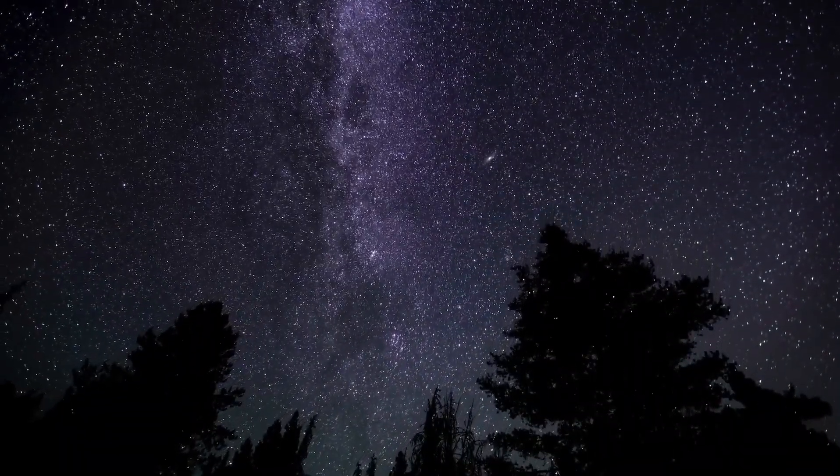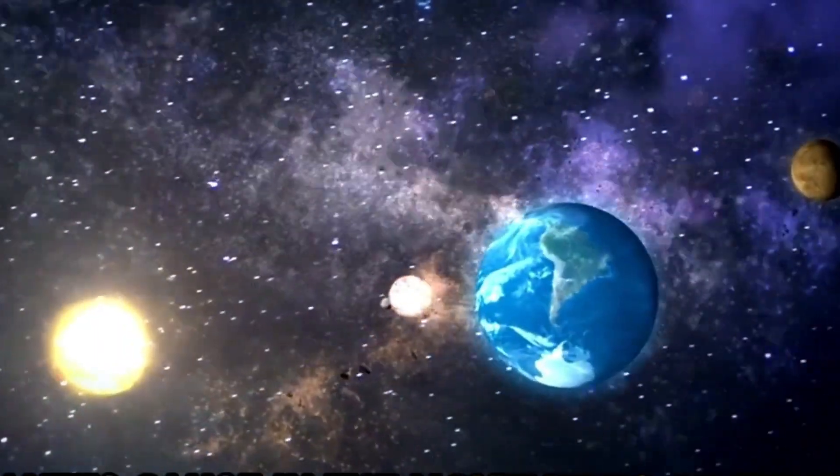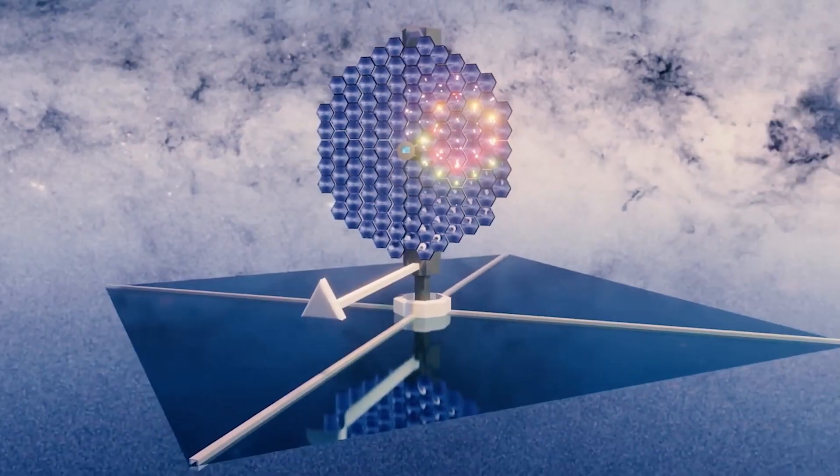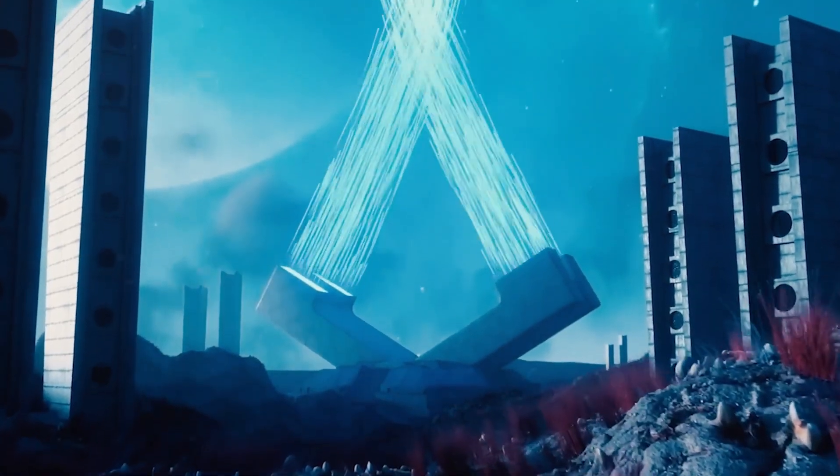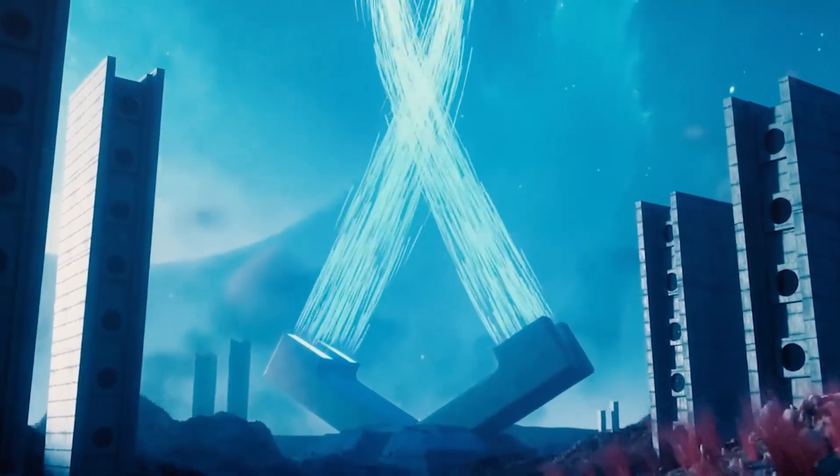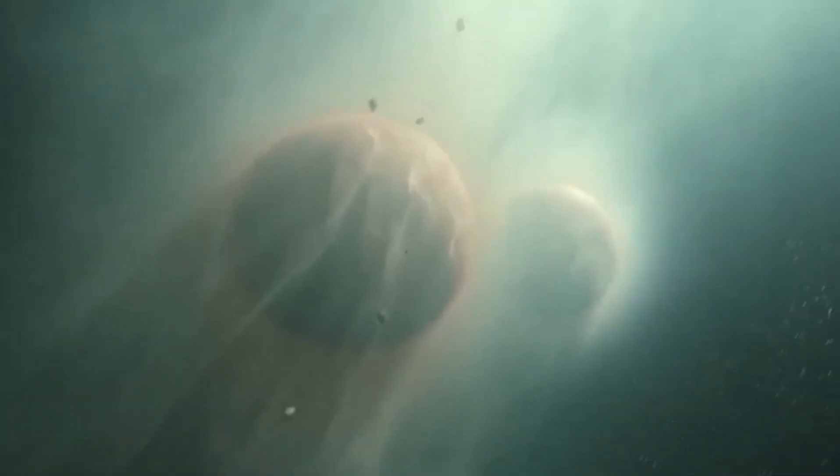This exoplanet's hydrogen-dominated atmosphere, with traces of water vapor, methane, and perhaps even dimethyl sulfide, is a treasure trove of scientific curiosities. Studying the atmosphere of an exoplanet more than 100 light-years away is not an easy task. It involves a technique called spectroscopy, which analyzes the light from the planet's parent star as it passes through the planet's atmosphere. Different molecules absorb light of specific wavelengths, creating a unique fingerprint that can be deciphered to determine the composition of the atmosphere.